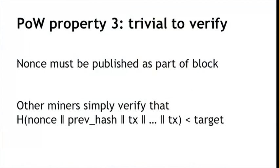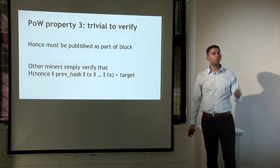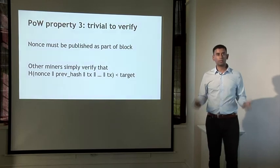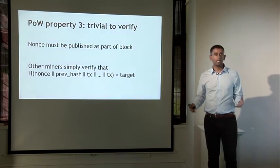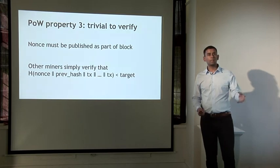The third important property of this proof-of-work function is that it's trivial to verify that a node has computed proof of work correctly. Even if it takes a node on average 10 to the 20 tries to find a nonce that succeeds, that nonce must be published as part of the block. So it's trivial for any other node to look at the block contents, hash them all together, and verify that the output is less than the target. This is an important property because it allows you to get rid of centralization — you don't need any centralized authority verifying that miners are doing their job correctly. Any node can instantly verify that a block found by another miner satisfies this proof-of-work property, and thereby be sure that the miner put in a lot of computing power into finding that block.